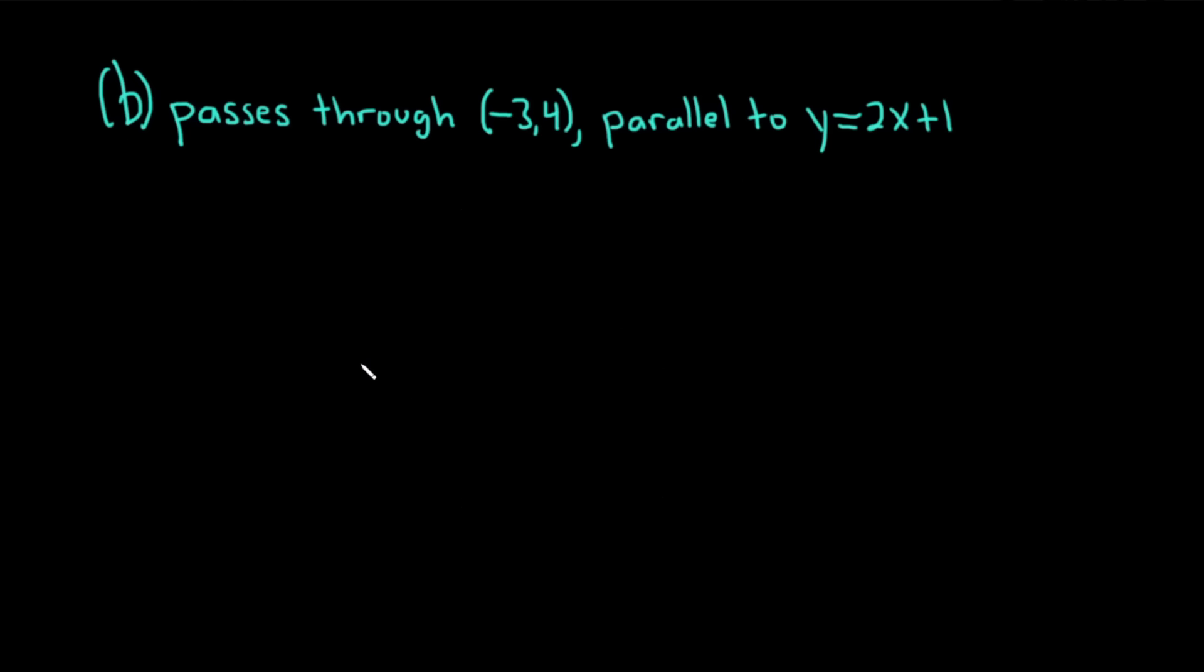In this next example, the information is a little bit different. We're told that it passes through the point (-3, 4), and it's parallel to the line y equals 2x plus 1. Let's work through this solution. We've already got a point. We just need the slope.